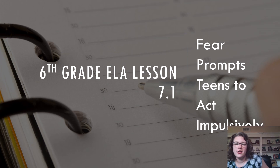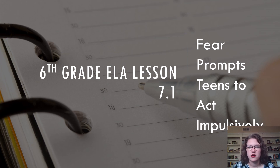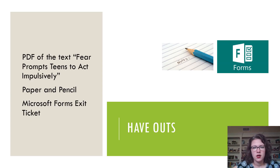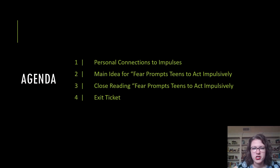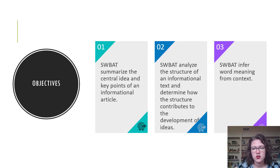Hello, wonderful sixth graders. I am here to present lesson 7.1, our first lesson for the week, which is a non-fiction article called 'Fear Prompts Teens to Act Impulsively.' You need to have a PDF copy of the article, a sheet of paper and something to write with, and your Microsoft Forms for your exit ticket. Our agenda: we'll make personal connections to impulses, talk about main idea, read the article, and do an exit ticket.